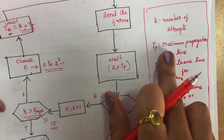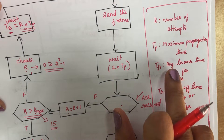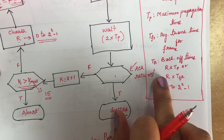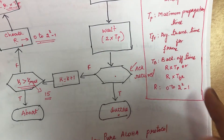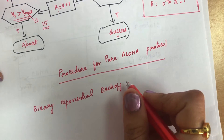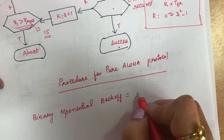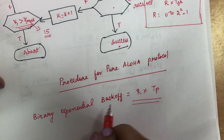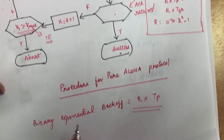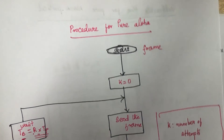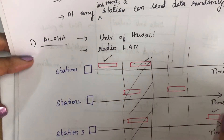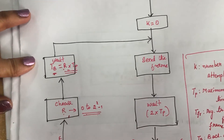Here, k is the number of attempts and Tp is the maximum propagation time. TFR is the average transmission time for a frame and TB is the backoff time, calculated with the formula r × Tp — this is called binary exponential backoff. You have to draw this diagram and explain the procedure for pure ALOHA.